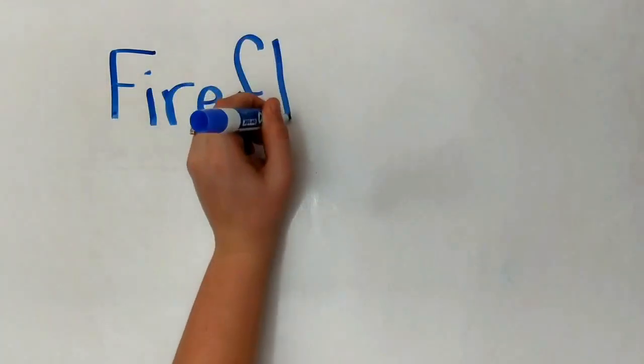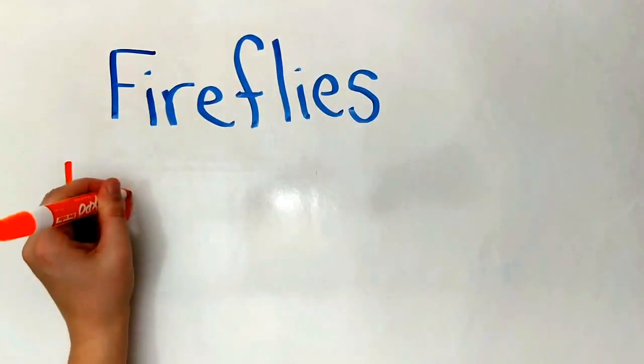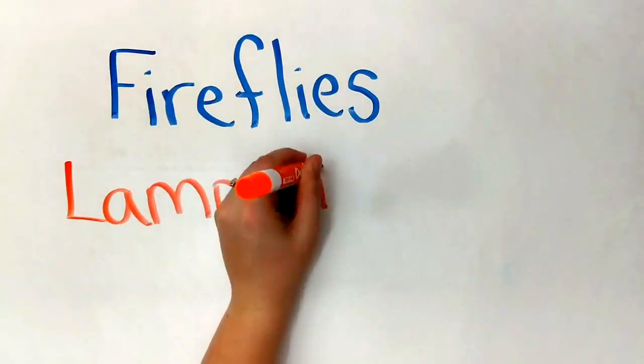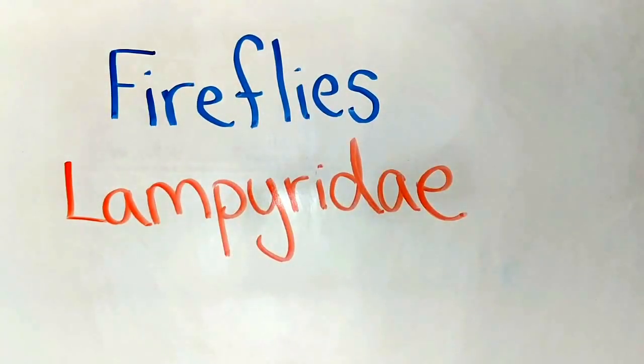Fireflies are a family of beetles. The scientific name for this family is Lampyridae. That tends to be an easier one to remember.